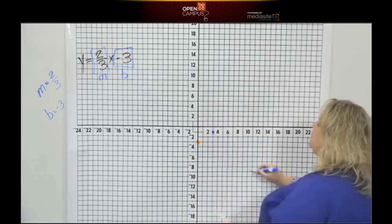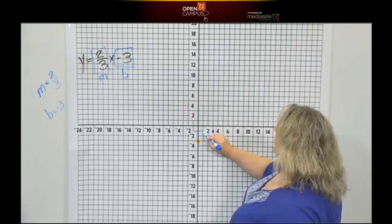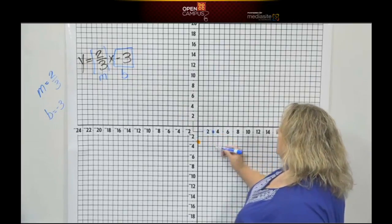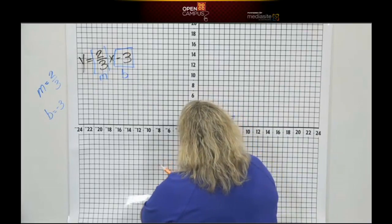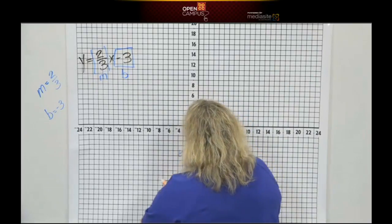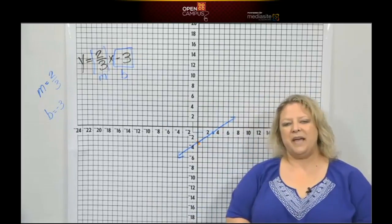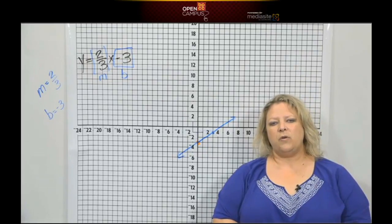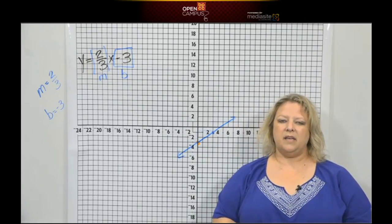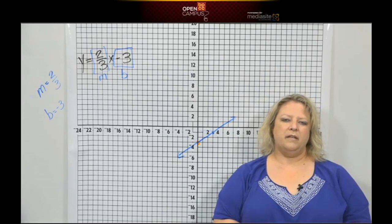So I climbed up two, one, two, and I ran three. One, two, three. And then all you got to do is connect your points. Connect your points and make your line. That's all there is to it. See, it's not that bad. All right. When you come back, we're going to graph, but this time it's going to be in standard form, so we have to do a little manipulating. See you in a minute.